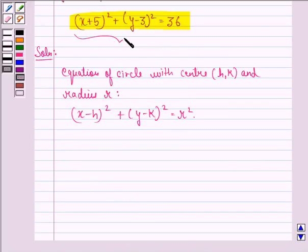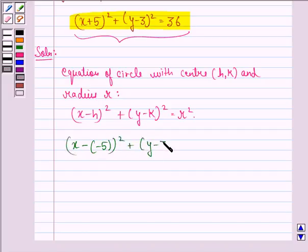Now writing the given equation in this form, we have (x-(-5))² + (y-3)² = 6².